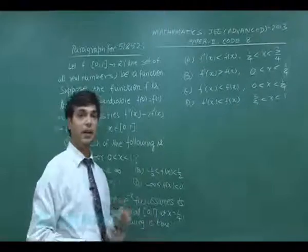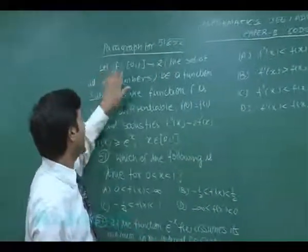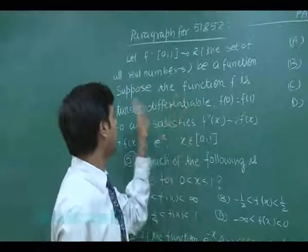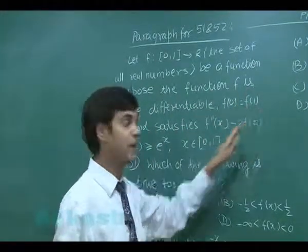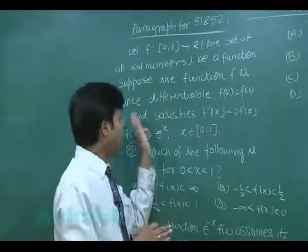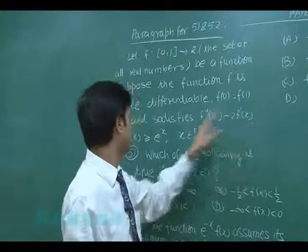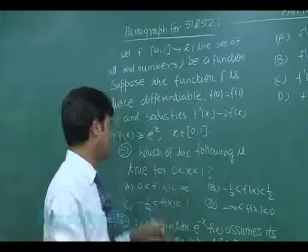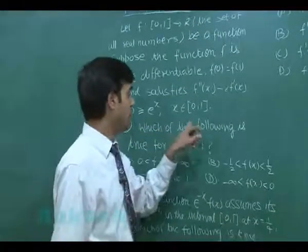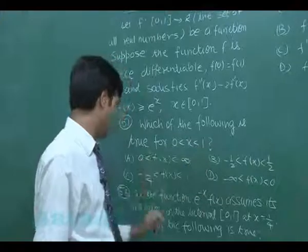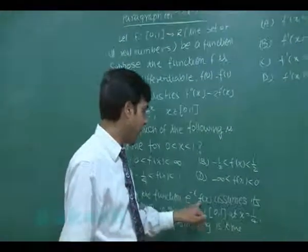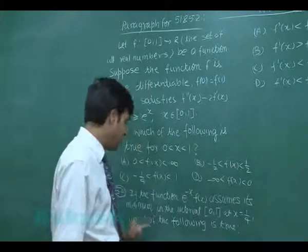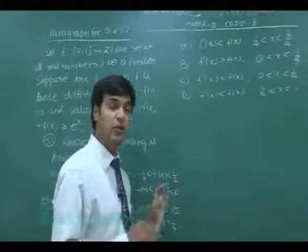Let's move to the next paragraph, questions 51 and 52. Let f: [0,1] → ℝ be a twice differentiable function such that f(0) = f(1) = 0 and satisfying f''(x) - 2f'(x) + f(x) ≥ eˣ for all x in [0,1]. Question 51 asks which of the following is true for x in (0,1). Question 52 asks: if e^(-x)f(x) assumes its minimum at x = 1/4, which of the following is true?